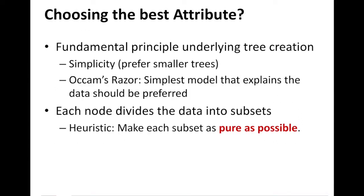The first question we'll answer is choosing the best attribute. Keep in mind that we always prefer simpler, smaller trees — remember Occam's razor? The simplest model that explains the data should be preferred. Each node divides the data into subsets, and the heuristic intuitively should make each subset as pure as possible. By pure, I mean data instances are either from the negative class or the positive class, not both. We want to make the subsets pure as we go down the tree, and finally reach the leaf node where it will be pure.